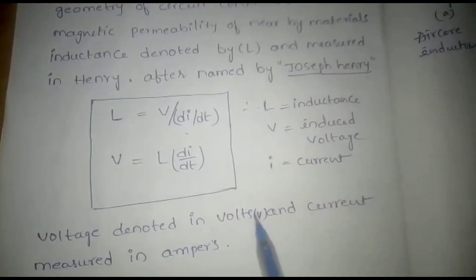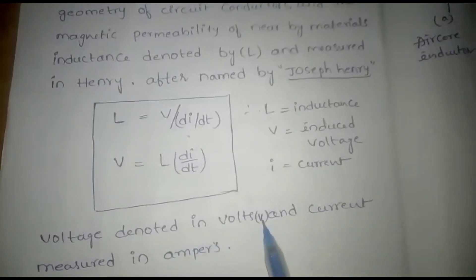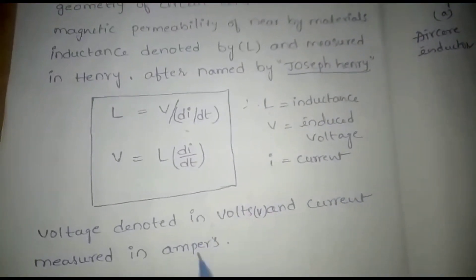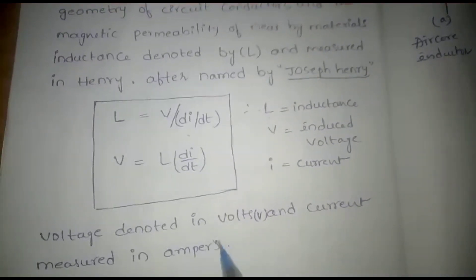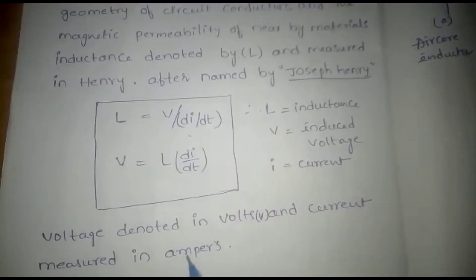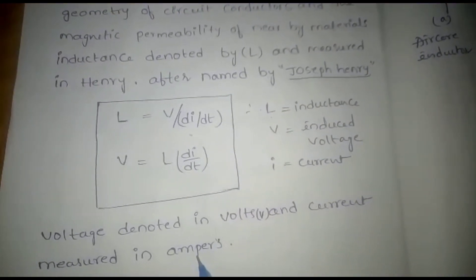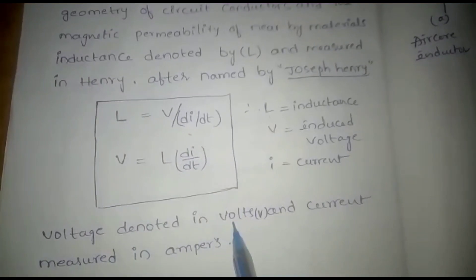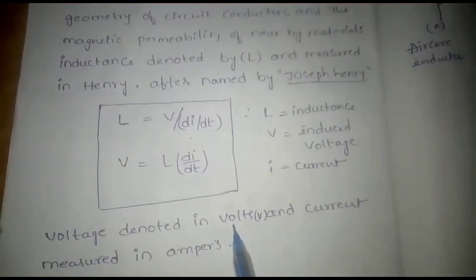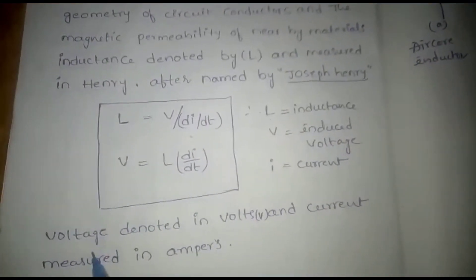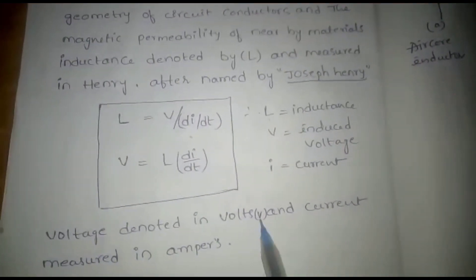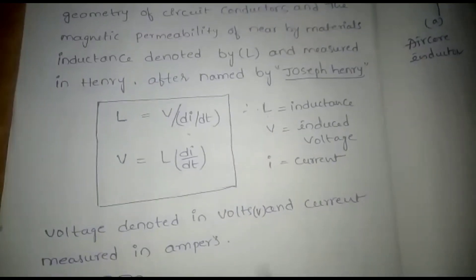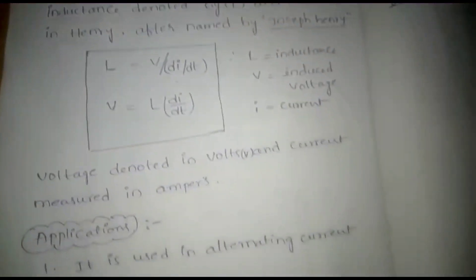Voltage is measured in volts and denoted by capital V. Current is measured in amperes and denoted by capital I.